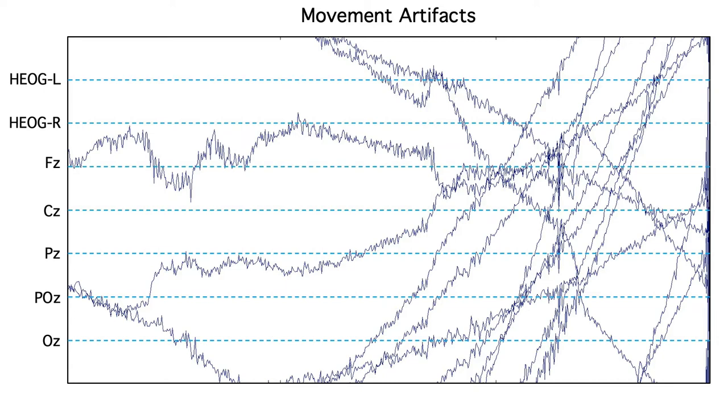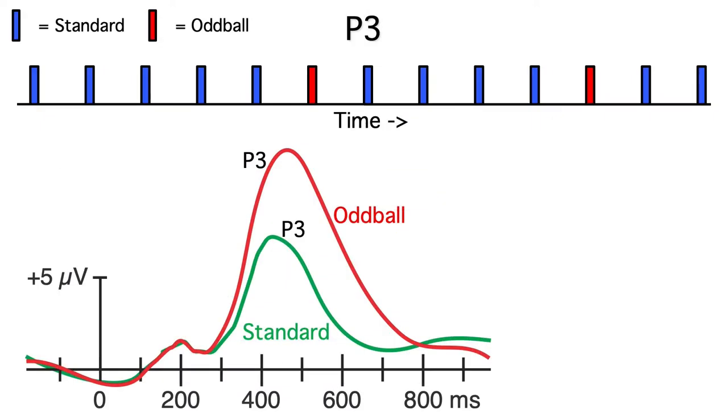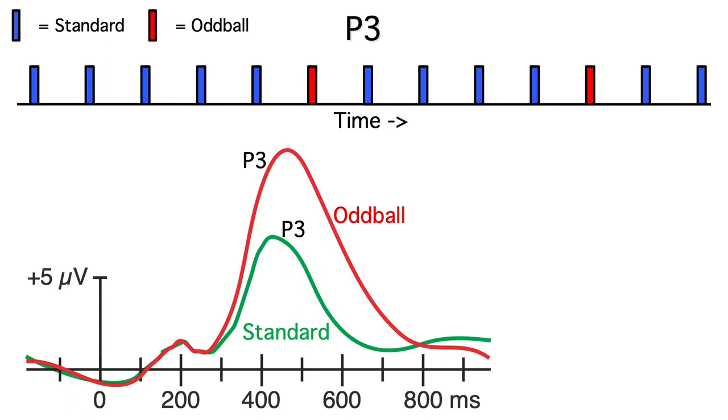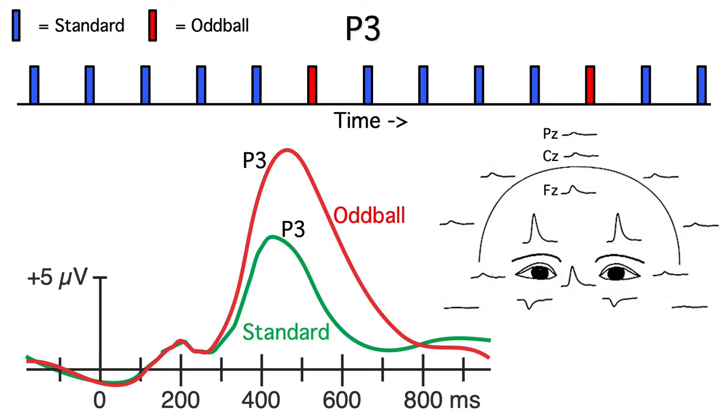The second issue is that the artifacts may not be random, and they may cause a systematic confound. For example, subjects in an oddball experiment tend to blink when they see the rare oddball stimuli. Blinks give us a positive potential over frontal electrode sites, so if we have more blinks for the rare oddballs than for the frequent standards, this would give us a more positive blink-related voltage for the oddballs. We'd think we were seeing a difference in brain activity between the oddballs and the standards, but we'd actually be seeing a difference in blinking.